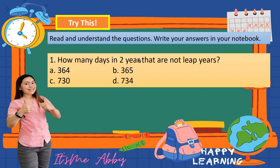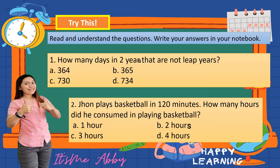First question: how many days in two years that are not leap years? A) 364, B) 365, C) 730, or D) 734. Second question: John plays basketball for 120 minutes — how many hours did he consume? A) 1 hour, B) 2 hours, C) 3 hours, or D) 4 hours.